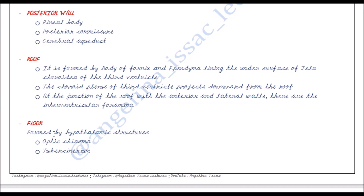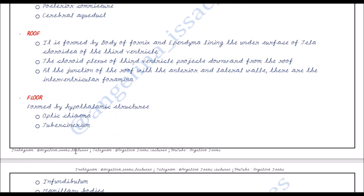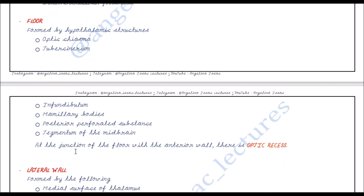To recap, the floor is formed by the hypothalamic structures including the optic chiasma, the tuber cinereum, the infundibulum, the mammillary bodies, the posterior perforated substance, and the tegmentum of the midbrain. At the junction of the floor with the anterior wall, there is the optic recess.